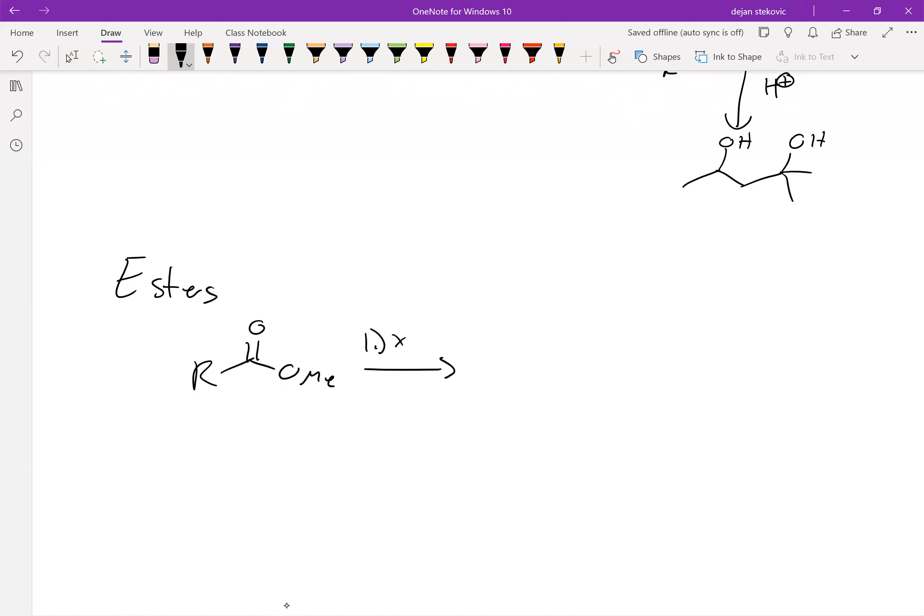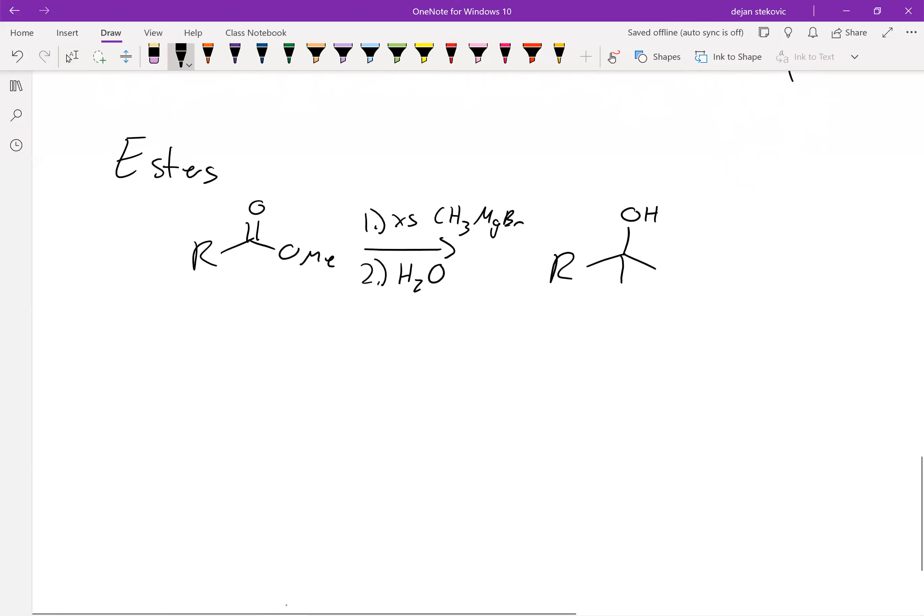So for example, if you added some excess of maybe your methyl Grignard reagent, and then after that do a water workup, you can form a tertiary alcohol. This is approximately the same mechanism as the lithium aluminum hydride. So we're not going to go over it, but you can check out the work along for the answer.